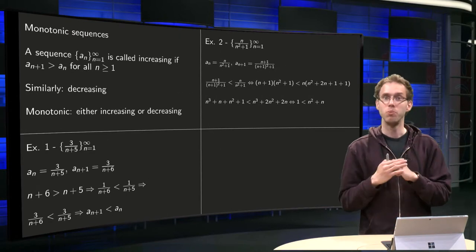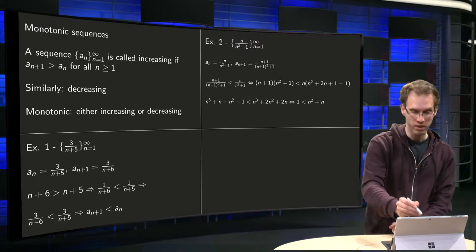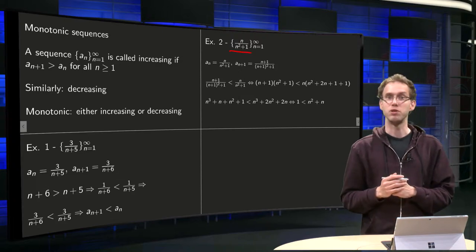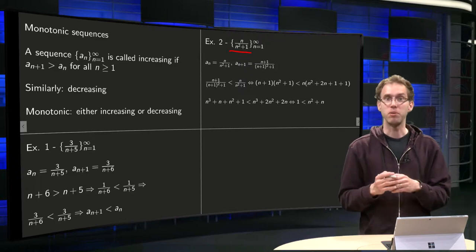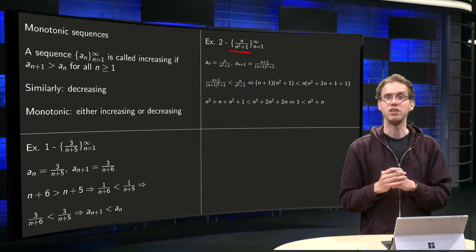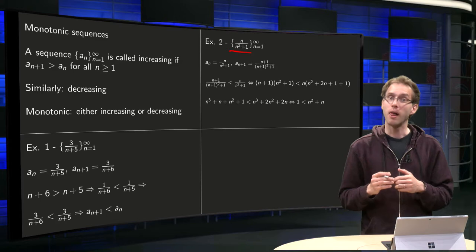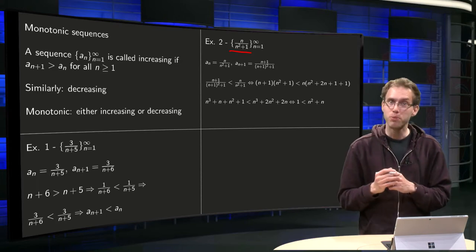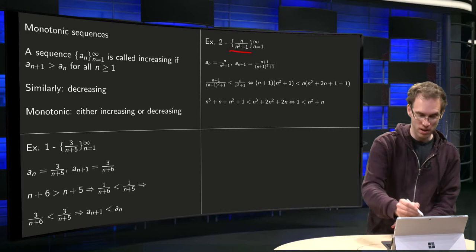So let's do one more proof, which is slightly more complicated. The sequence n/(n²+1). You see that if n becomes big, you already see that it tends to 0, so it's probably decreasing again, but how do you prove it nicely?